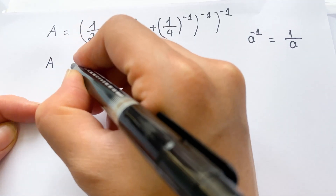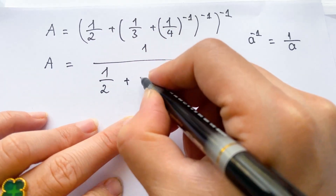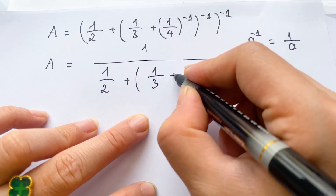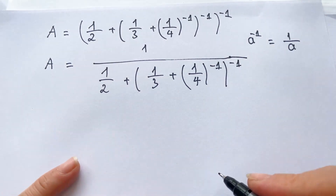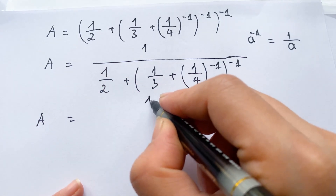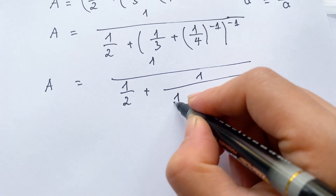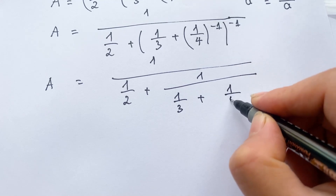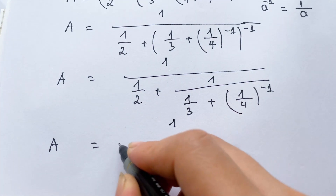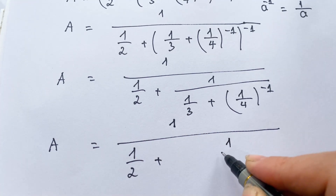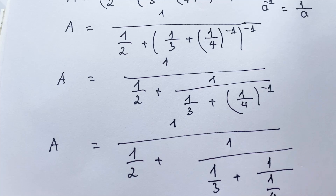So in this case we can say a equals one over one-half plus bracket one plus one-fourth to the power minus one. Applying the property, a equals one over one-half plus one over one-third plus one over one-fourth.